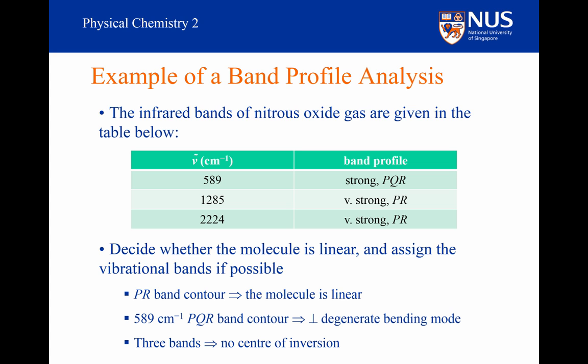Next, we need to decide whether the molecule is NNO or NON. Well, there are three bands that are infrared active. If the molecule was centrosymmetric, that is, had the structure NON, then its symmetric stretch would be infrared inactive, and only two bands would be active. As there are three bands, nitrous oxide must have the structure NNO.